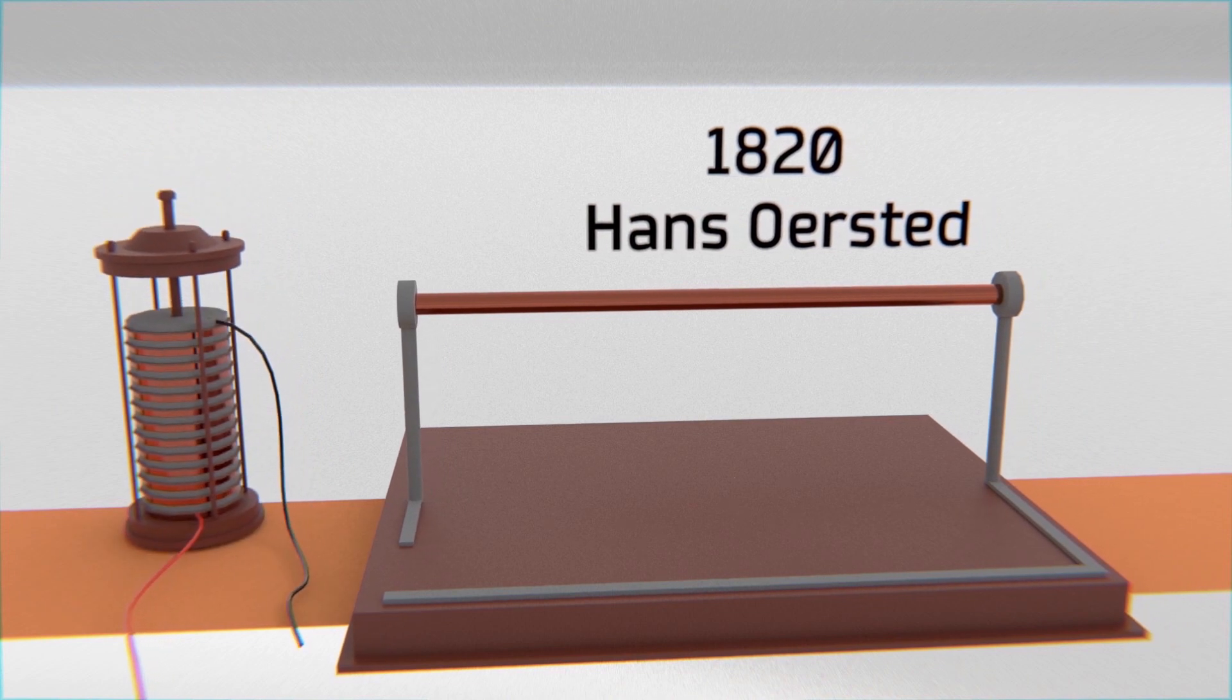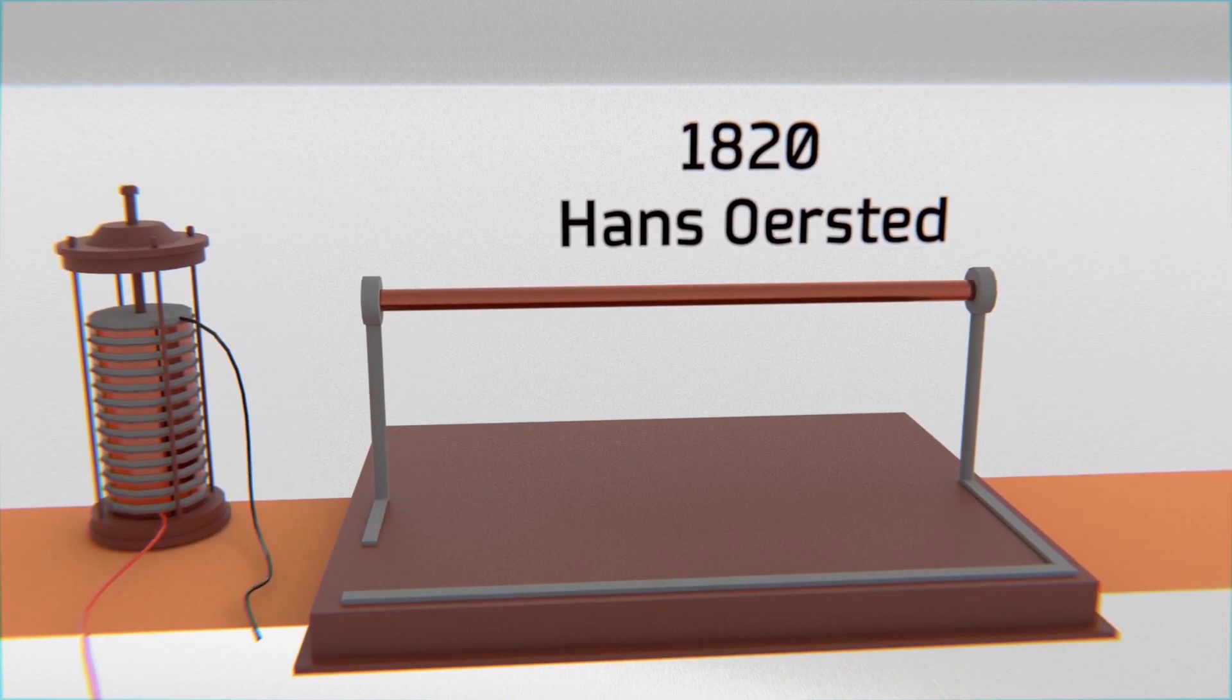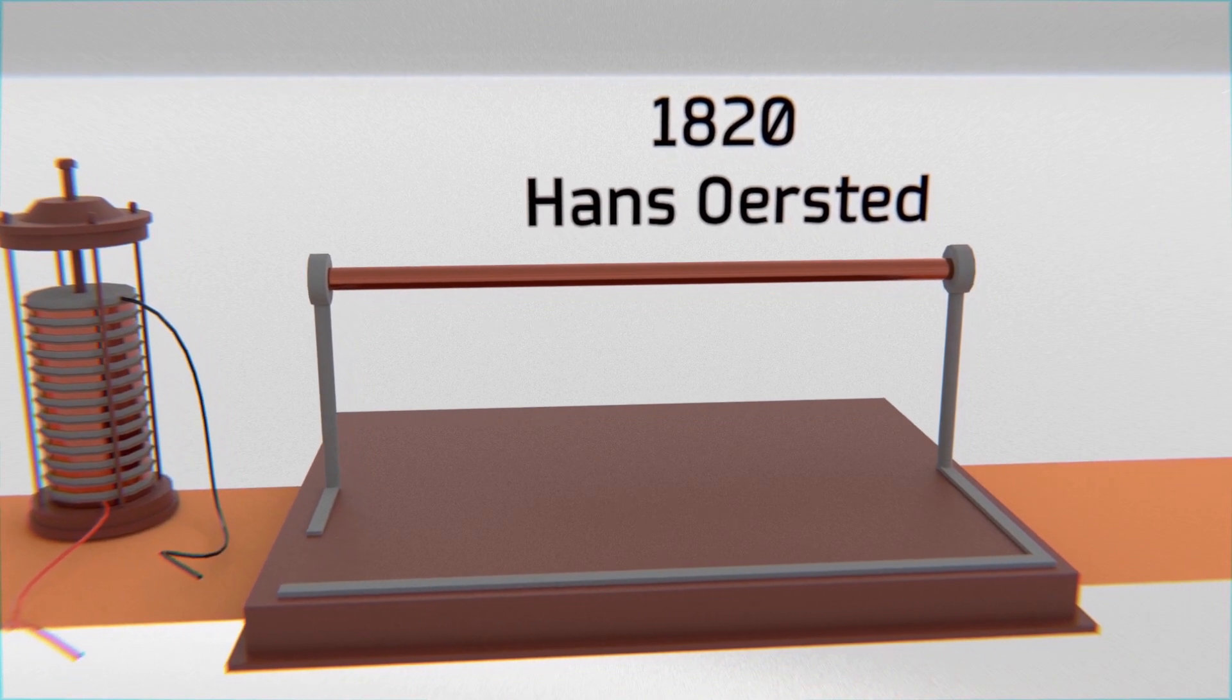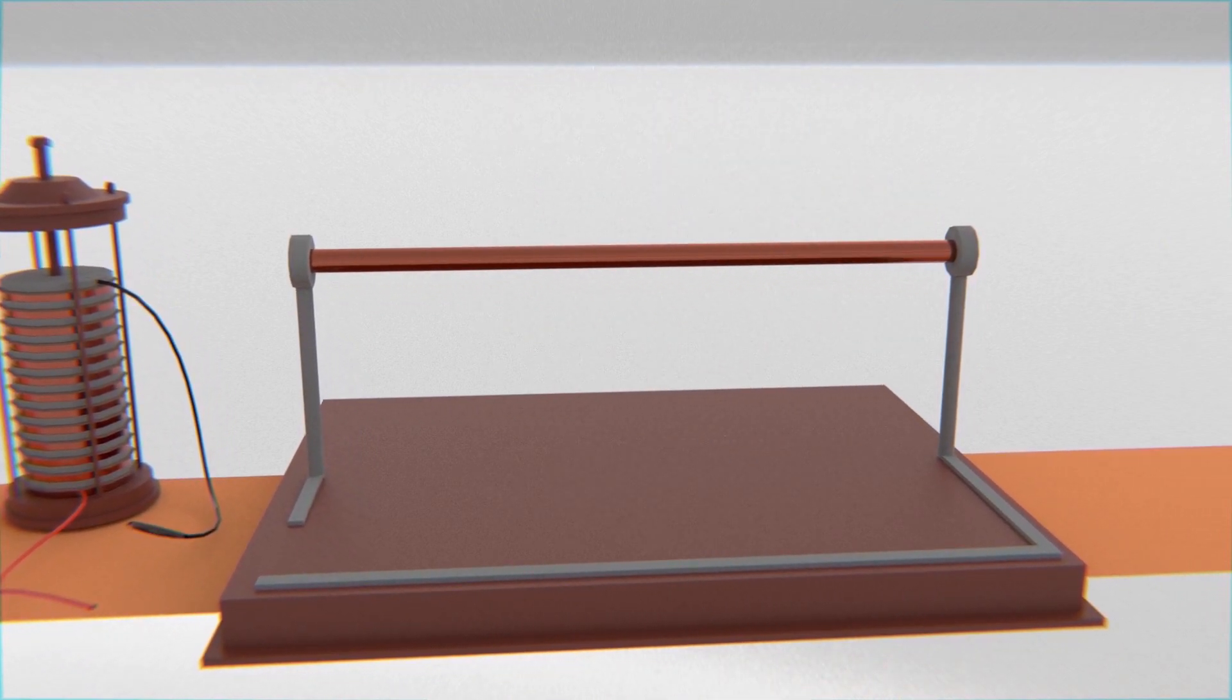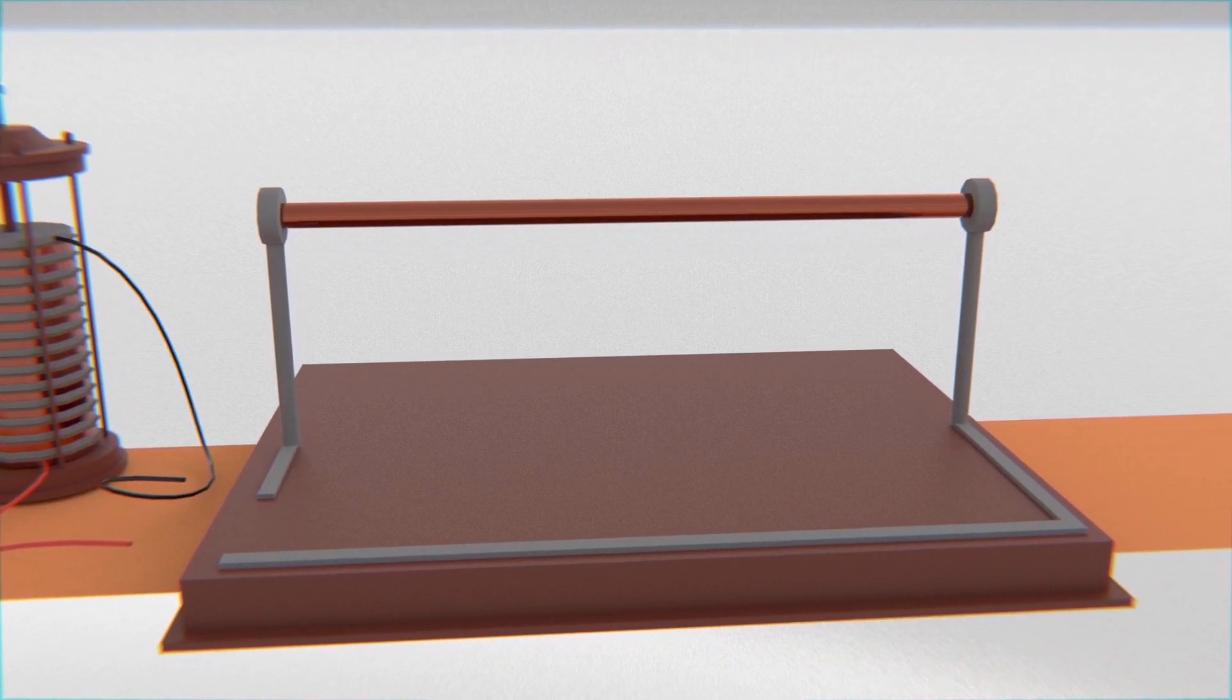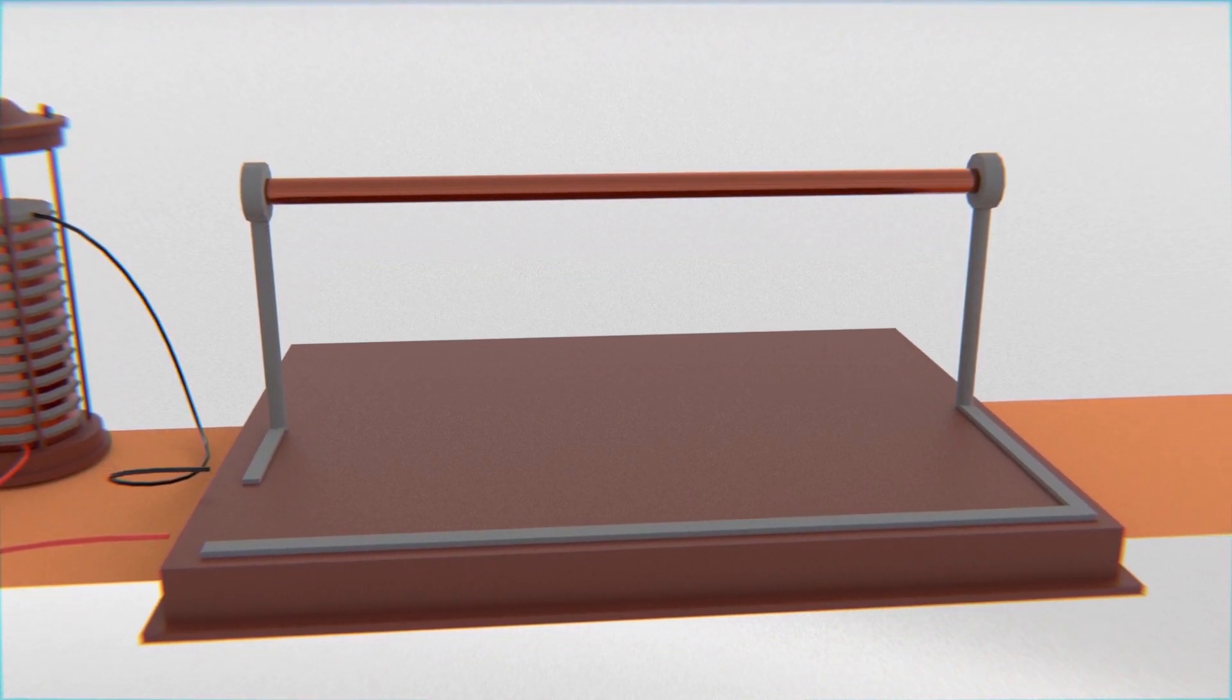In 1820 Hans Christian Ørsted discovered that an electric current could generate a magnetic field. Now this is especially important because it is this relationship that allows you to convert electrical energy into mechanical energy.